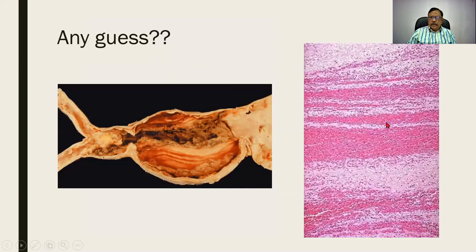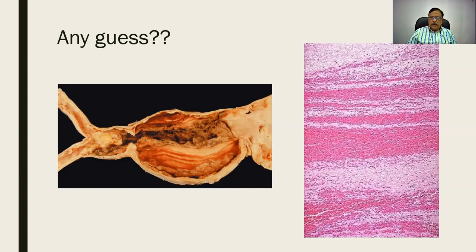Can you guess what this one is? Look carefully — you find alternate dark and light lines. This is a distended portion of the aorta with a thrombus that has developed within it, showing alternate dark and light lines. You have areas of RBC and then the paler WBC. These are called the Lines of Zahn.